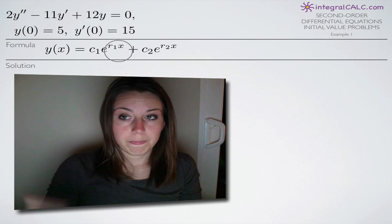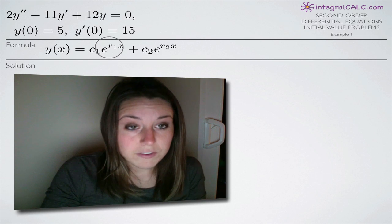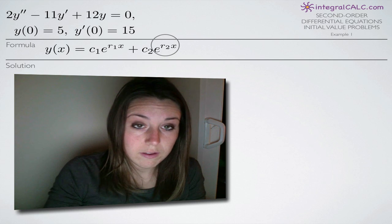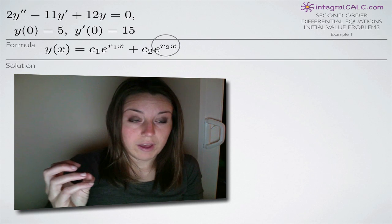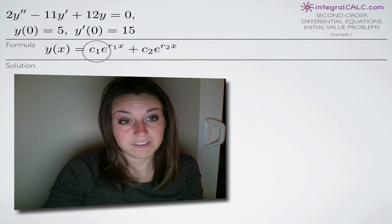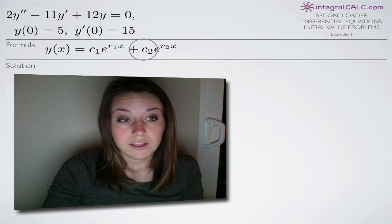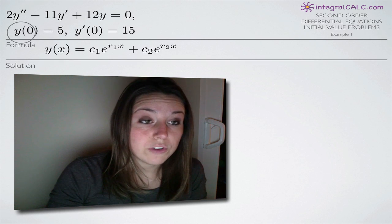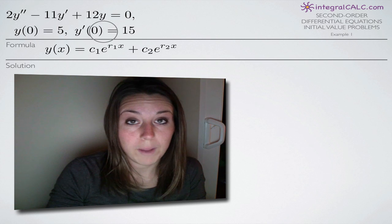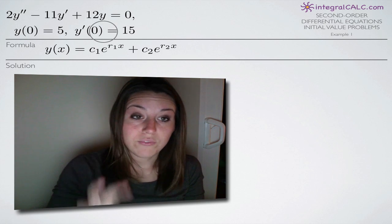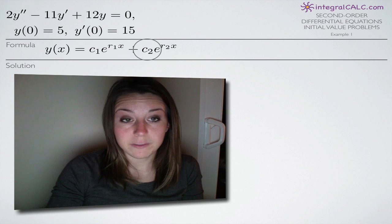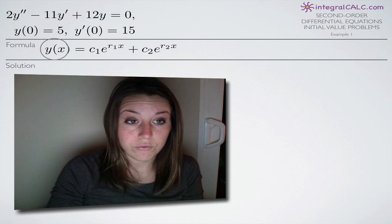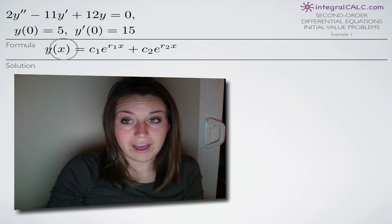To give you a preview of what we're going to be doing: we're going to solve first for r sub 1 and r sub 2 in the exponents. Once we do that, we'll come up with an equation for y(x) that still has c sub 1 and c sub 2 in it. We'll take the derivative to get y prime of x, then use our initial conditions for y(0) and y'(0) to plug in those values, solve for c sub 1 and c sub 2, and come up with our final formula for y(x).